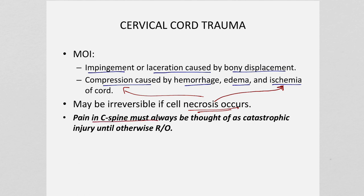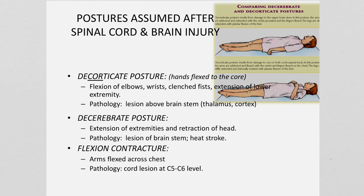Pain in the cervical spine must always be thought of as catastrophic until all other things have been ruled out. Whether the patient presents with a chronic or an acute pathology, we always want to rule out the worst case scenario first before beginning patient evaluation. The worst case scenario is a fracture, dislocation, or any trauma to the spinal cord in the cervical region. If a patient has acute trauma to the spinal cord and is unconscious, we need to be prepared for what we observe.